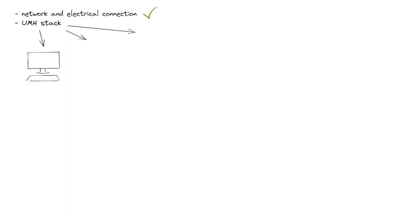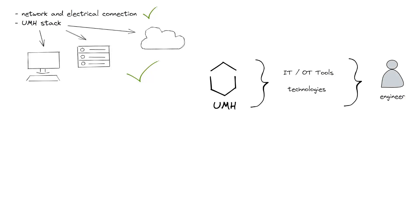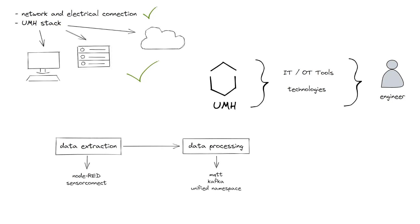As a precondition, a network and electrical connection is already set up and the United Manufacturing Hub stack is installed either on-premise, on-edge or in the cloud, or everything together in large deployments. The United Manufacturing Hub is an open-source Helm chart for Kubernetes which combines state-of-the-art IT/OT tools and technologies and brings them into the hands of engineers. By this, it is possible to calculate production KPIs in real-time from the data in the database. The general approach is to first extract and process the data from the machines using Node-RED, Sensor Connect and so on, then push it to MQTT, Kafka and the unified namespace, from where the data is automatically written to a database like TimescaleDB and prepared for visualization.